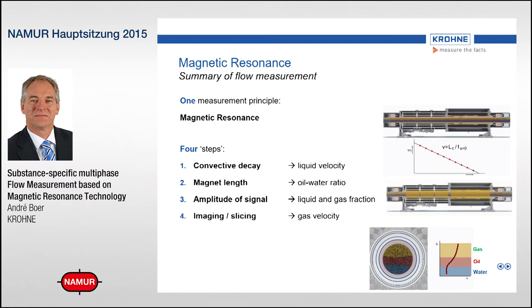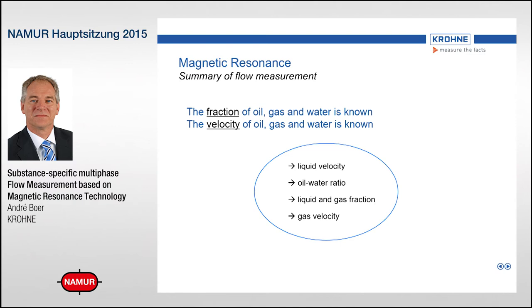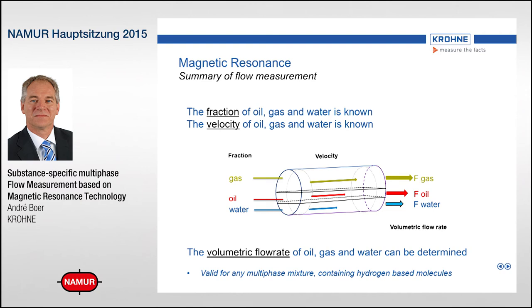Finally, by doing imaging — making slices through the cross-section — we can find out exactly what the gas velocity is. In total, we have determined the fraction of oil, gas, and water — and yes, we know them. We also know the velocity of oil, gas, and water. Combining the fractions and the velocities gives us the individual flow rates of water, oil, and gas.